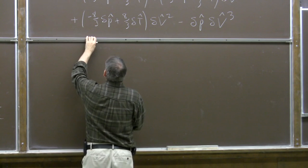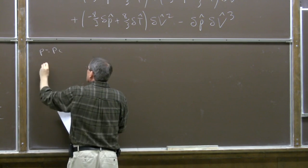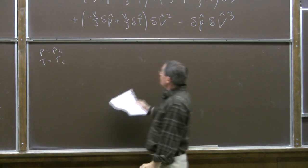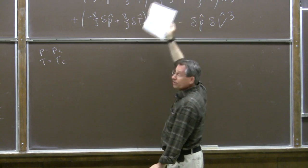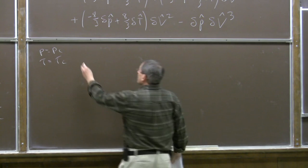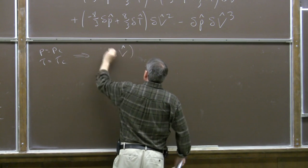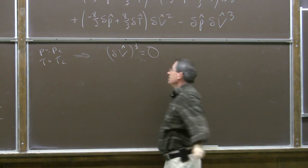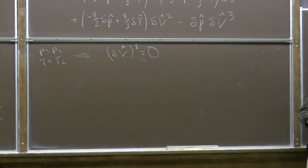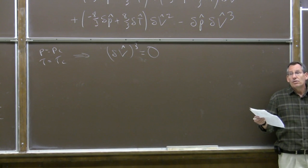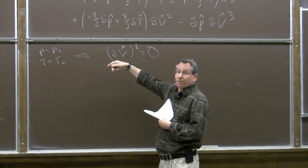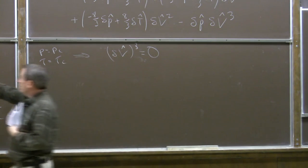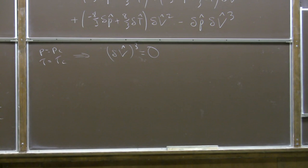If we're at the critical point—P equals P_c and tau equals tau_c—then delta-P-hat and delta-tau-hat are both zero. All the terms on the right-hand side vanish, and this becomes delta-V-hat cubed equals zero. The zero of the volume that determines the root becomes triply degenerate at the critical point. That's where these three real roots for the volume coalesce to become a degenerate root.